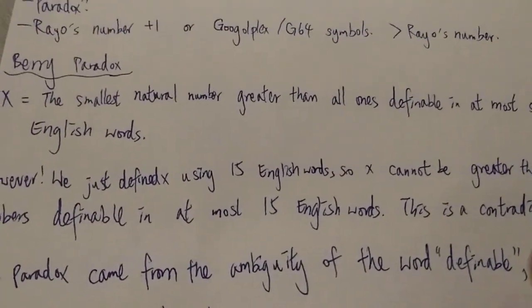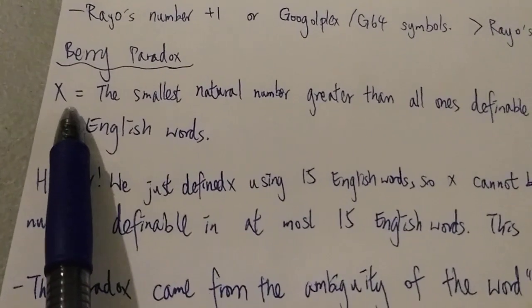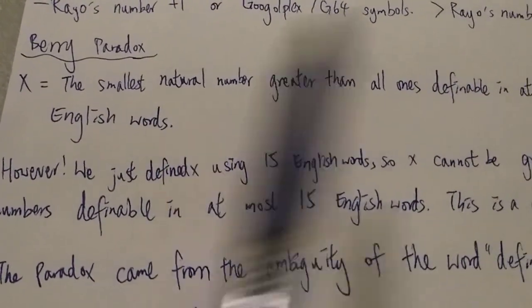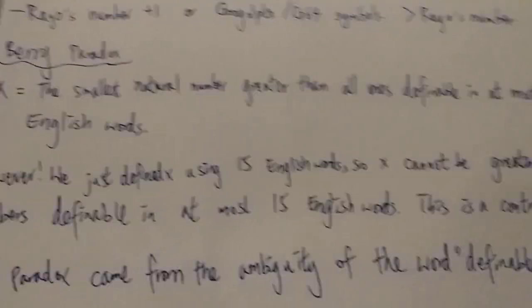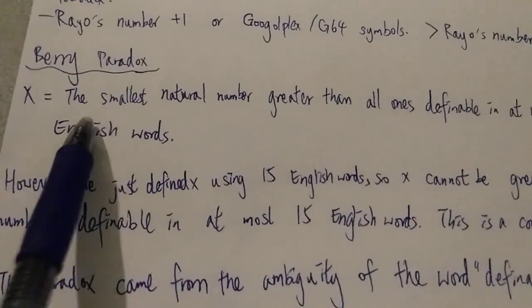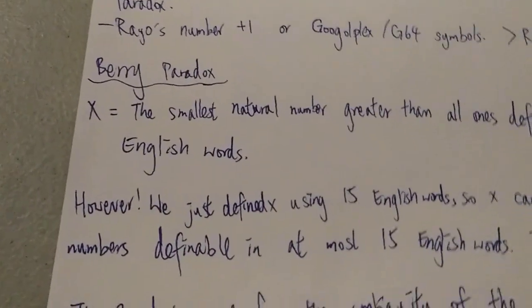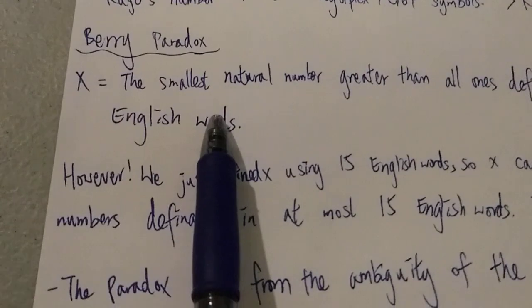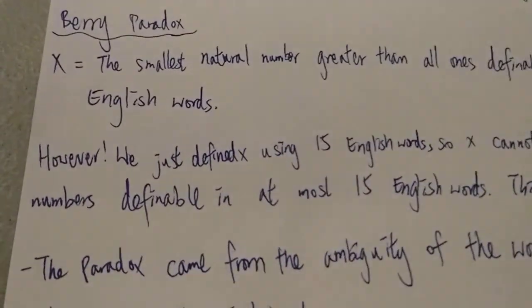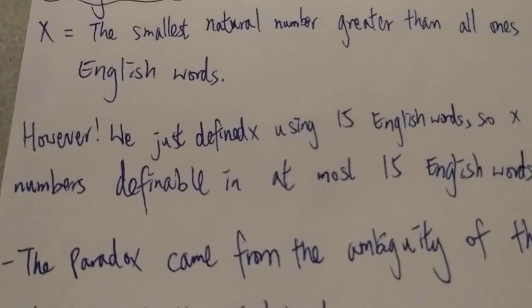This statement is a contradiction because it's saying X is the smallest natural number greater than all ones that is definable with at most 16 English words. But here we just defined X using 15 words. So it cannot be greater than itself, or you know this is just 15 English words and X has to be greater than any number definable with 15 English words.